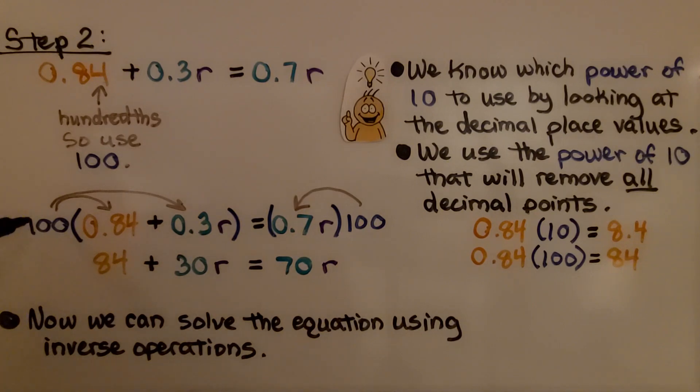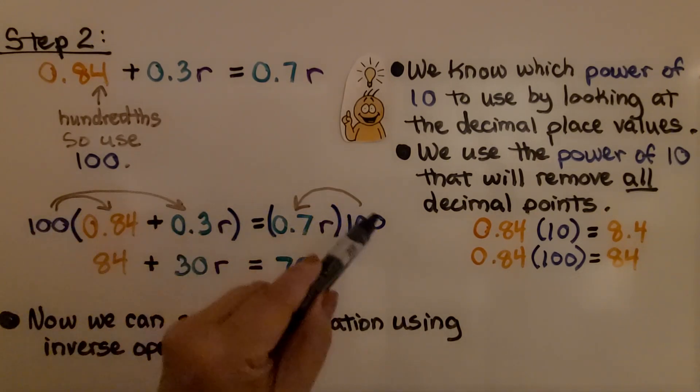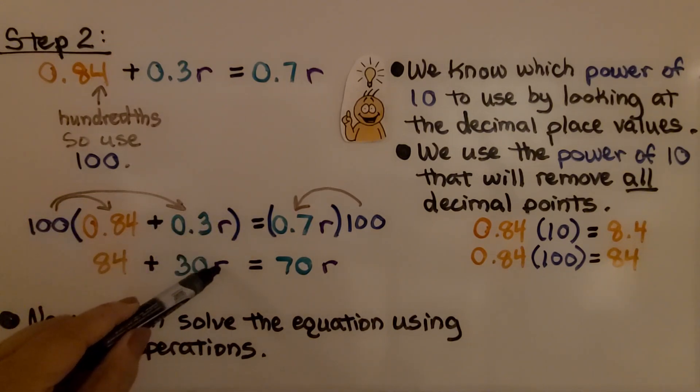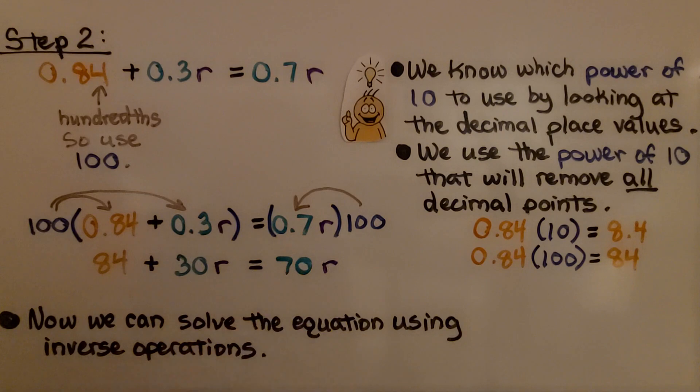If we multiply by 100, it will then be 84 and it will be a whole number. So we're going to multiply by 100. We multiply this side of the equal sign by 100 and this side by 100. We get 100 times 0.84 is 84, times 0.3 is going to be 30 and we drop our r down. On this side we get 70r.